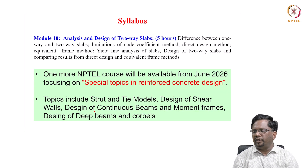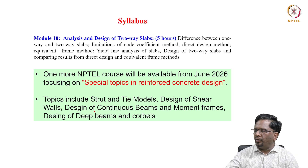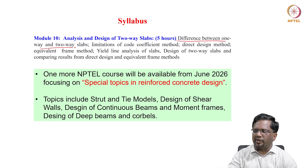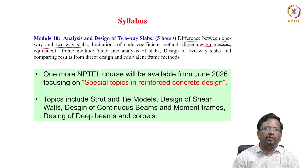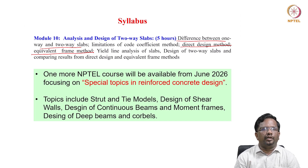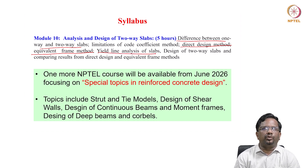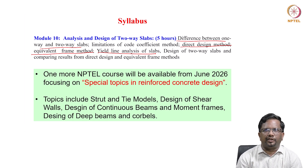Module 10 is a very important topic on two-way slabs. Most design engineers use the code coefficient method, which is not strictly correct. We will discuss the difference between one-way and two-way slabs, the limitations of the code coefficient method, the direct design method, and the more generic equivalent frame method. We will also introduce yield line analysis and design a two-way slab through a real case study, comparing results between the direct design and equivalent frame methods.